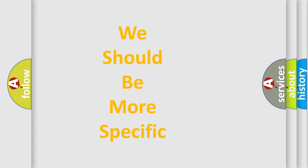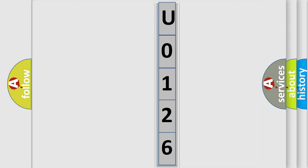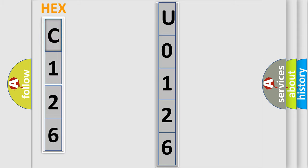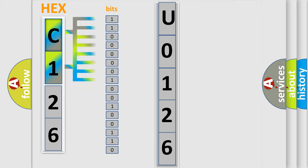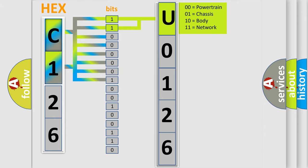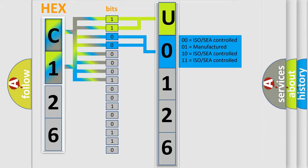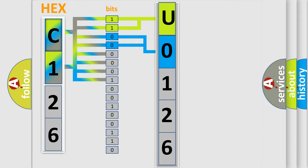The following demonstration will help you look into the world of software for car control units. The error code is split into two bytes consisting of 16 bits. One bit is the basic unit that each computer works with. The bit has two logical states: zero (low level) and one (high level). By combining the first two bits, the basic character of the error code is expressed. The next two bits determine the second character. The last bits of the first byte define the third character of the code.